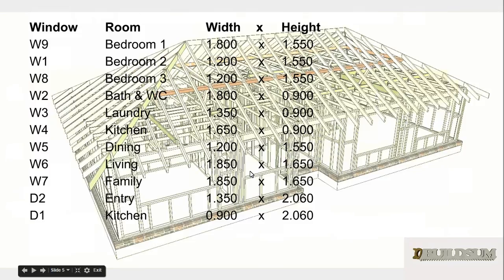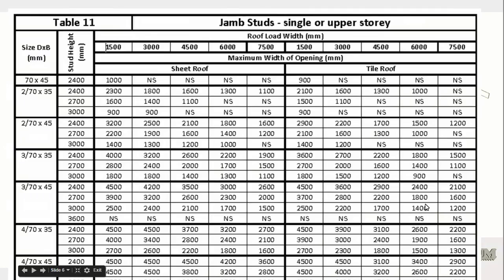The main thing we need to know to work out the size of our studs at the side of our openings is the width of our opening. We've got the window schedule here with our windows and doors on it, and the main column we're concerned with is our width column. Our first opening is 1800 wide, so we'll go to our span tables.